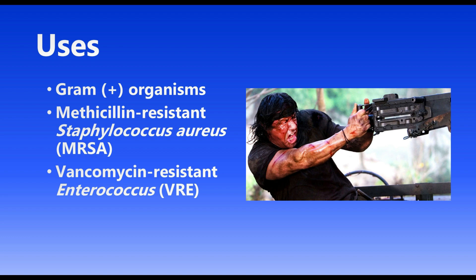In terms of the uses of Linazolid, this is one of those big gun antibiotics, thus the picture of Rambo here. It's primarily used for gram-positive organisms. Some areas we see Linazolid being used are pneumonia, skin infections, osteomyelitis - those more serious infections where other antibiotics just won't cut it. Big areas where Linazolid is used are for MRSA, methicillin-resistant Staphylococcus aureus, as well as VRE, vancomycin-resistant Enterococcus. These are very multi-drug-resistant organisms, and you need stronger antibiotics like Linazolid.